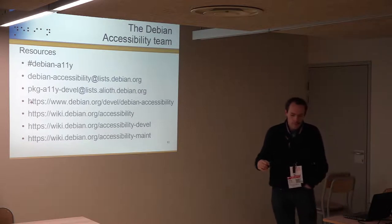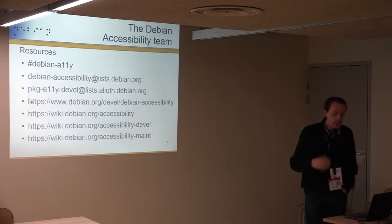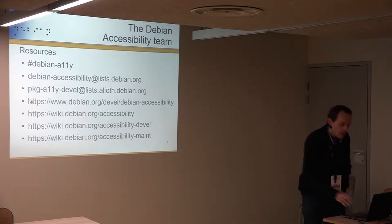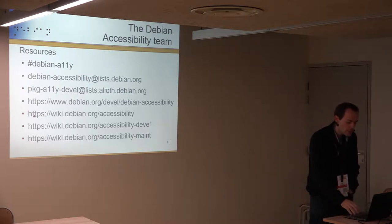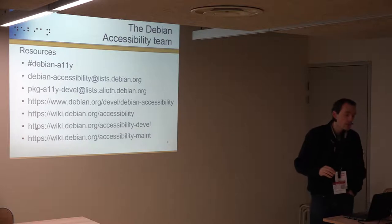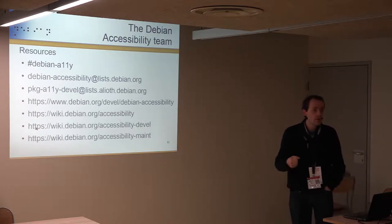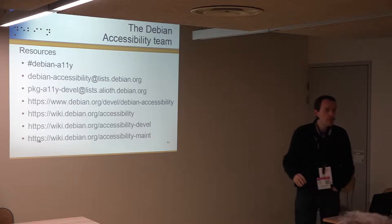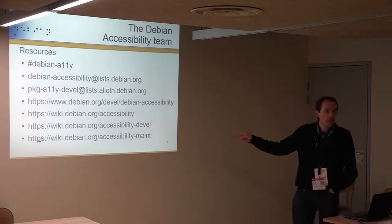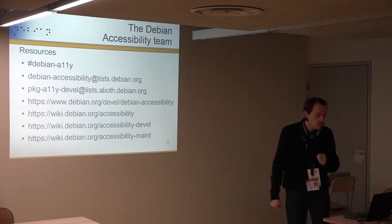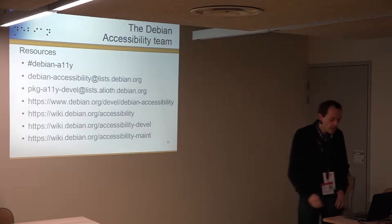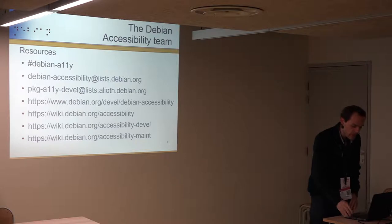There are three wiki pages: the first is for users — blind people, deaf people, anyone who needs accessibility — explaining how things work and what configuration is available. The second is a development wiki for people implementing things in Debian accessibility. The third is for Debian maintainers — a page meant to bridge the accessibility team and other Debian teams or any developer interested in thinking about accessibility.